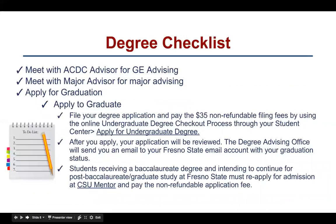Degree Checklist. Meet with the Advising and Career Development Center advisor for GE advising. Meet with your major advisor for major advising. Apply for graduation: file your degree application and pay the $35 non-refundable filing fee by using the online undergraduate degree checkout process through your Student Center. Apply for undergraduate degree. After you apply, your application will be reviewed. The degree advising office will send you an email to your Fresno State email account with your graduation status. Students receiving a bachelor's degree and intending to continue for post-bachelor or graduate study at Fresno State must reapply for admission via CSU Mentor and pay the non-refundable application fee.